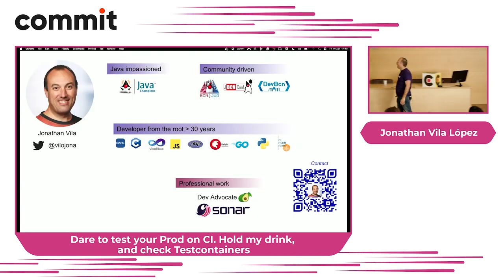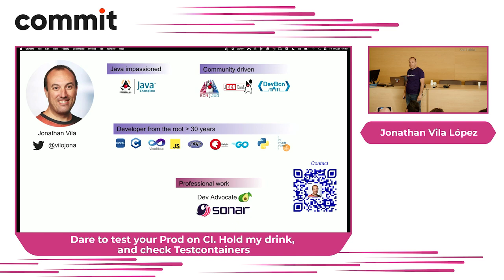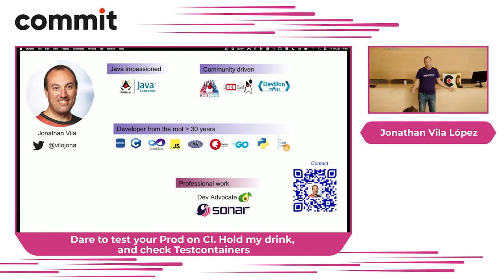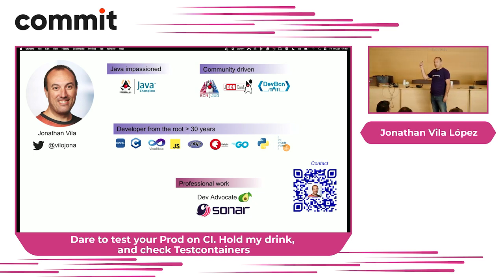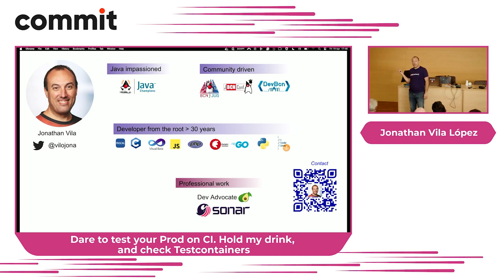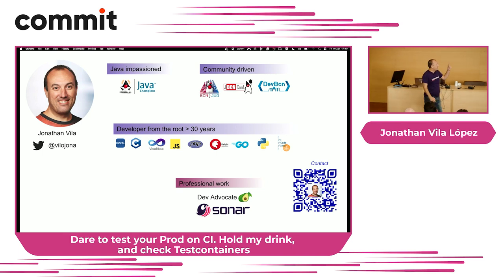First of all, this is me — Jonathan Vila. I'm a Java champion and one of the leaders of the Barcelona Java community, and also one of the co-founders of JBCN Conf and DevBCN, a conference we run in Barcelona every year. I've been a developer for more than 30 years with lots of different languages, but the one I loved the most was Delphi. Now I work as a developer advocate for Sonar — the company behind SonarQube. If you want to know more about me, just scan the QR code.